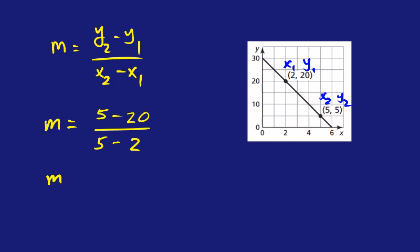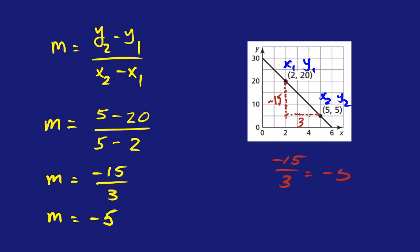So we have m equals 5 minus 20 divided by 5 minus 2. That gives us negative 15 over 3, which equals negative 5. Looking at it graphically: from the left point, you go down 15 units — that's negative 15 — and over 3 units to the right, giving negative 15 over 3, which is negative 5.